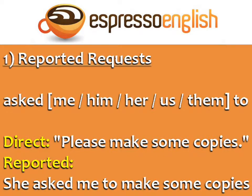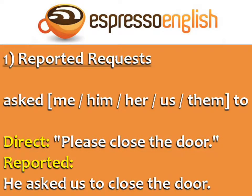For reported requests, use the structure: asked me/him/her/us/them + to. For example: Direct: 'Please make some copies.' Reported: 'She asked me to make some copies.' Direct: 'Please close the door.' Reported: 'He asked us to close the door.' In the case of reported requests, the main verb does not change — it is 'close' in both the direct and reported statement.